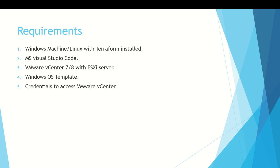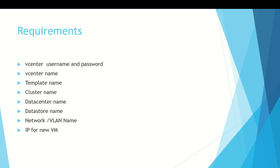The basic requirements we already discussed: we need a Windows machine with Terraform installed, Visual Studio Code installed, and a vCenter and ESXi host. As a prerequisite, we'll be creating a Windows Server 2016 template that is already configured with the Windows OS. We should also have credentials to connect to vCenter, a vCenter name, template name, cluster name, datacenter name, datastore name, VLAN details, and an IP for our virtual machine.